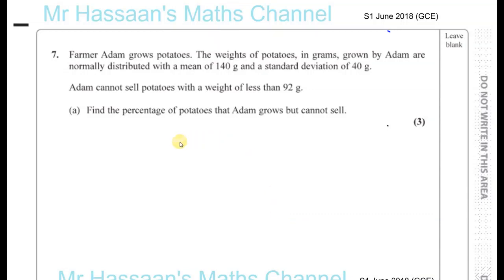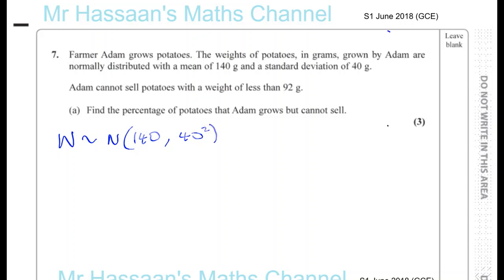Question number seven from S1, June 2018, the GCE paper. Farmer Adam grows potatoes. The weights of potatoes in grams grown by Adam are normally distributed with a mean of 140 grams and a standard deviation of 40 grams. Adam cannot sell potatoes with a weight less than 92 grams. Find the percentage of potatoes that Adam grows but cannot sell.